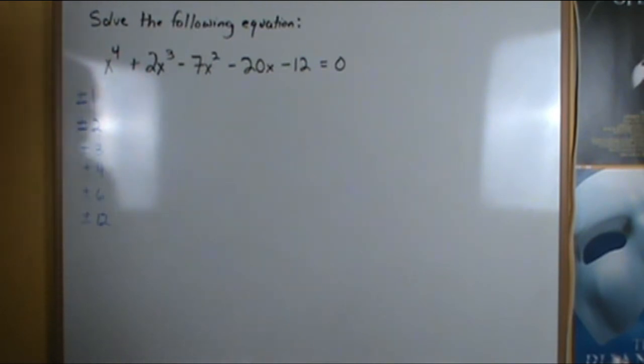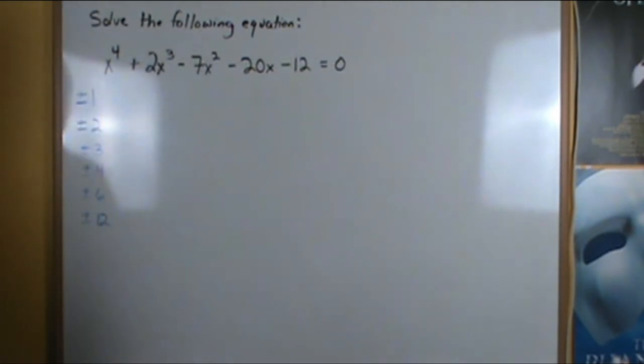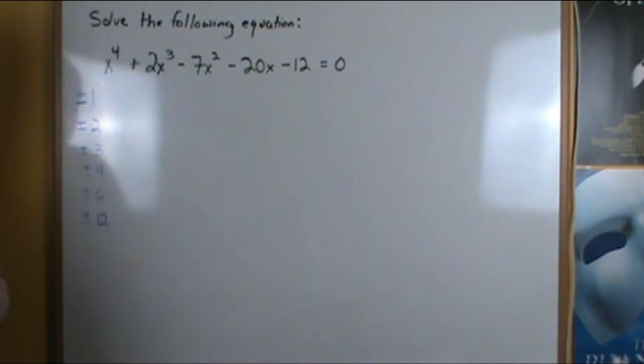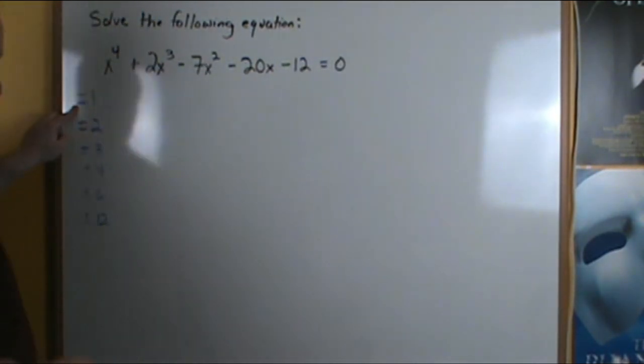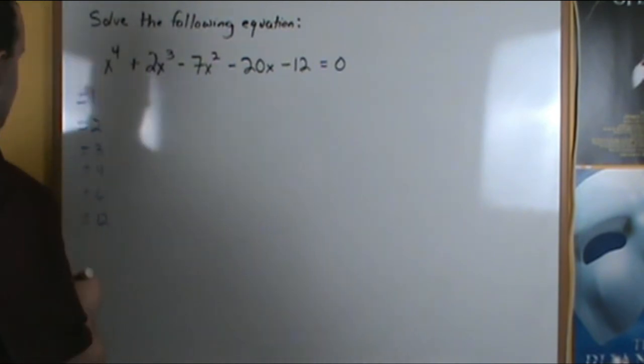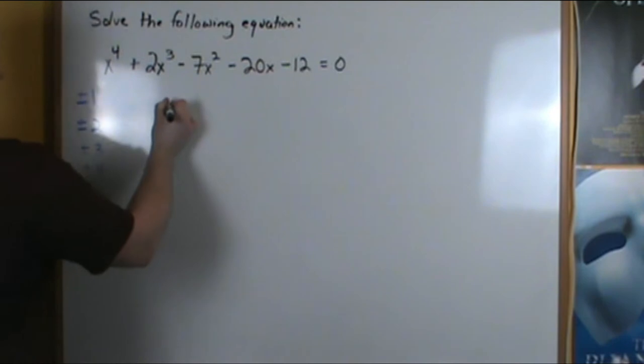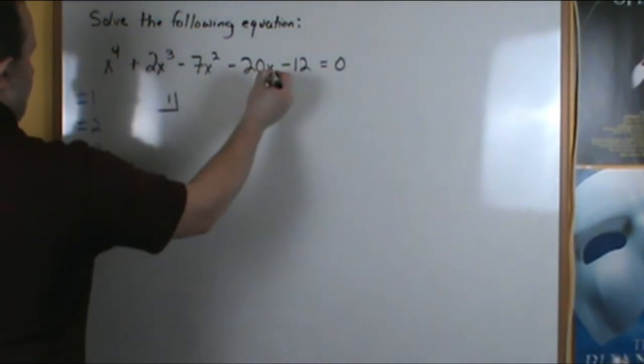So what we have to do is use synthetic substitution to figure out which one or ones work. And then we can find a depressed polynomial and solve using that information as well. So let's try our first number here, plus or minus 1. If we use positive 1 and do synthetic division with it, we have our coefficients in order.